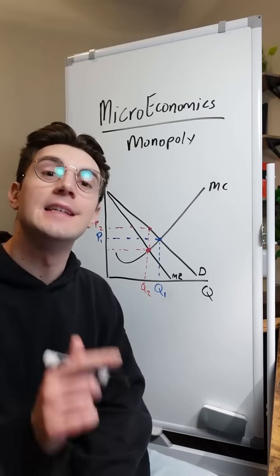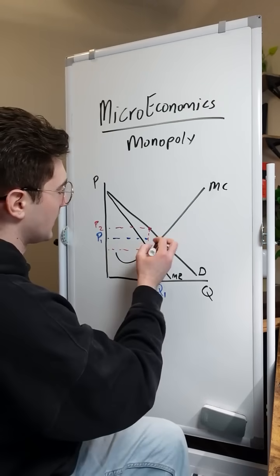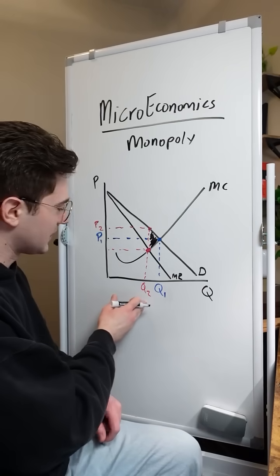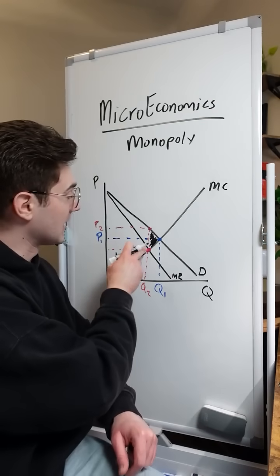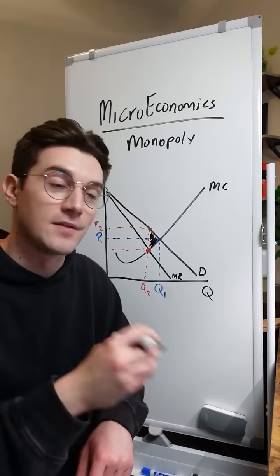Now, from here, we can see the deadweight loss triangle right here. And this is caused by that reduction in quantity from the socially optimal point by the monopoly producing at their profit maximizing point of MR equals MC.